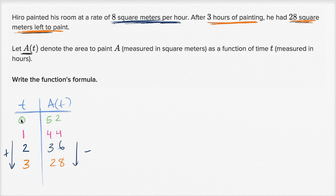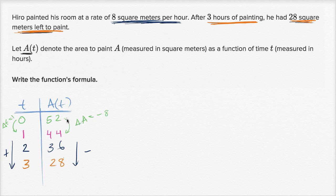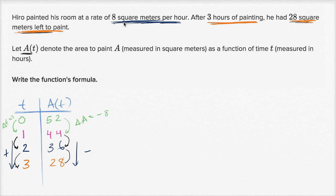Let's think about whether that makes sense. If right when he was starting he had 52 square meters to paint, then an hour goes by — change in time is one hour — and the change in how much he has left to paint goes down by eight. Change in a is equal to negative eight. That makes sense: his rate of change should be negative, because the amount he has left to paint goes down as time goes forward. Every time t goes up by one, a of t goes down by eight. That's because he paints at a constant rate of eight square meters per hour, and a constant rate can be described by a linear function.